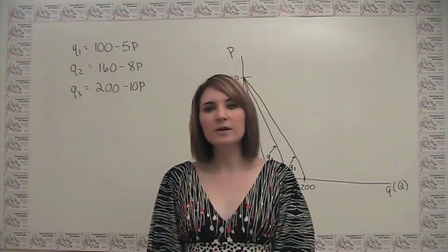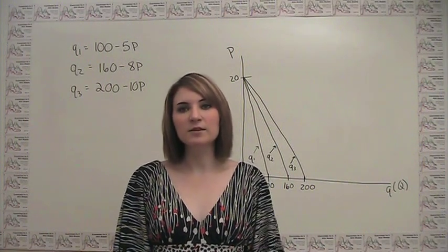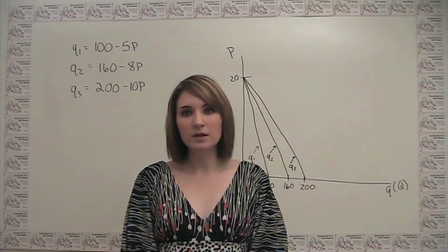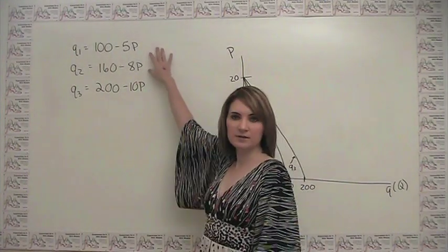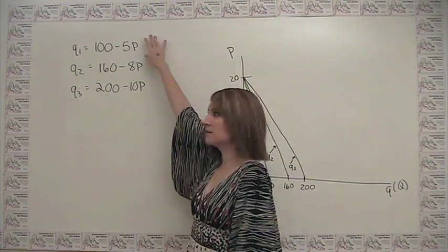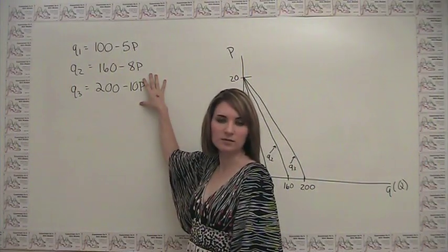We're going to think about, given these individual demands for candy, how much does the market demand if we assume that the market just consists of these three participants. So you look over here, we have three different demands. Let's just say the first one is Julia's demand, the second one is her husband's demand, and the third one is her daughter's demand.